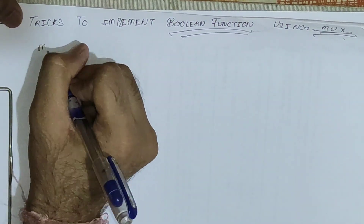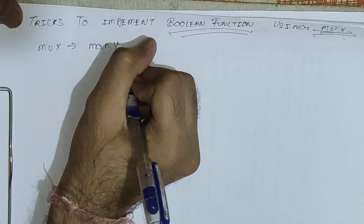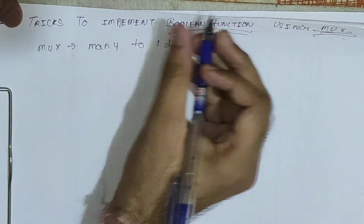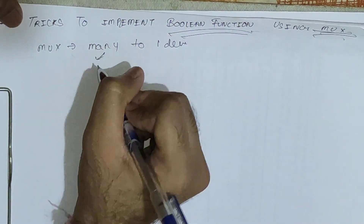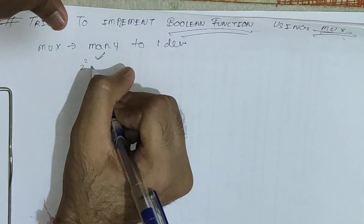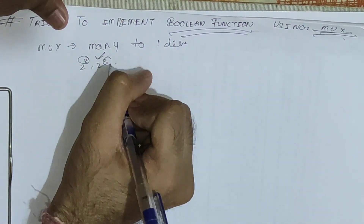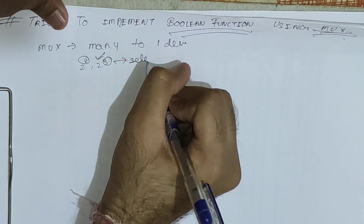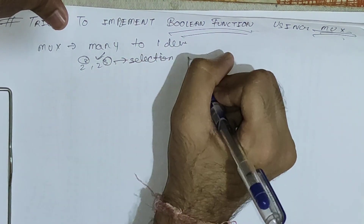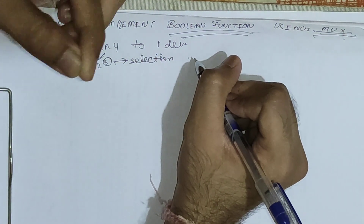Basically, a mux is a many-to-one device. The inputs can be many but should be in powers of 2, i.e., 2 raised to 2, 2 raised to 3. These exponents (2 and 3) are called selection lines. Selection lines are used to select one input to route to the output.